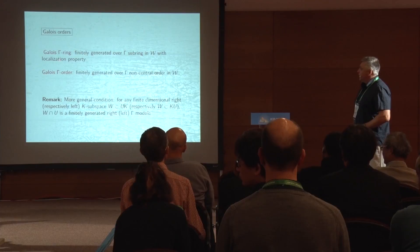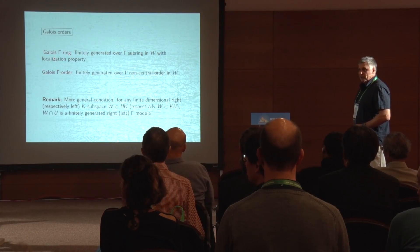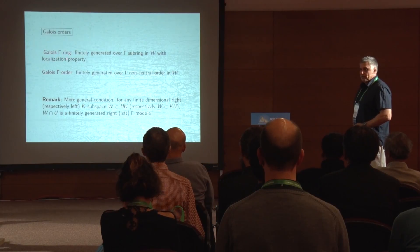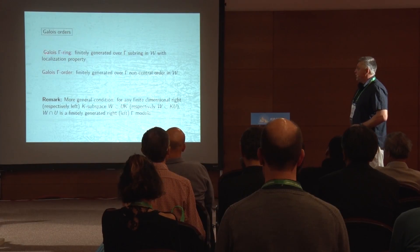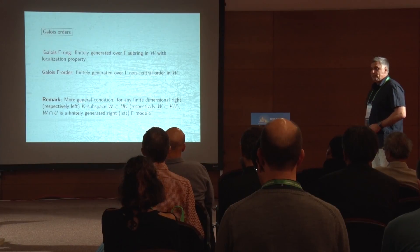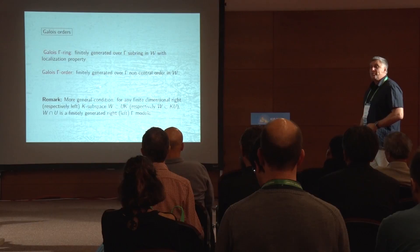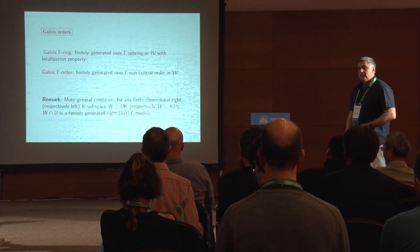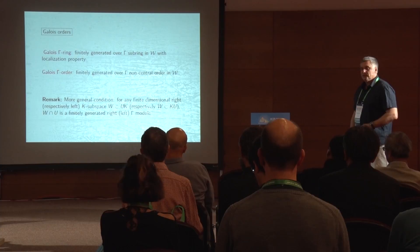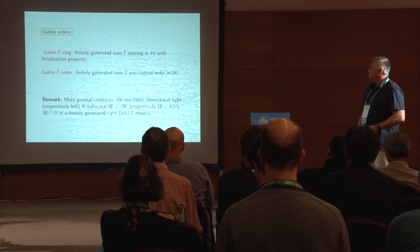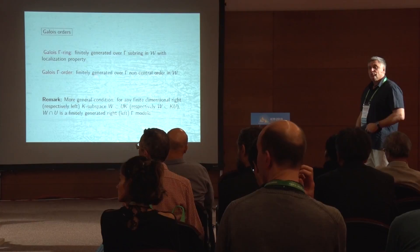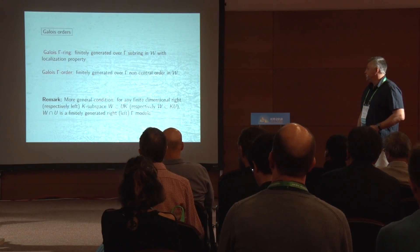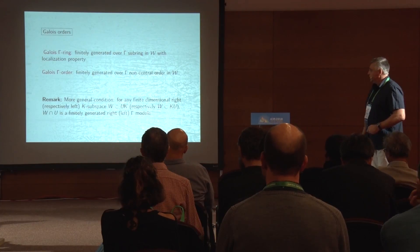The gamma orders we are interested in are called Galois orders — introduced in our work with Futorny and Ovsienko in 2010. They are finitely generated over gamma, non-central orders in this invariant skew group subring. Sometimes we need a weaker condition ignoring projectivity, using only the localization property, and then we call the ring a Galois gamma ring. All known examples of Galois orders are free or conjecturally free over gamma, so projectivity and the weaker condition are very likely equivalent, but this remains an open problem.